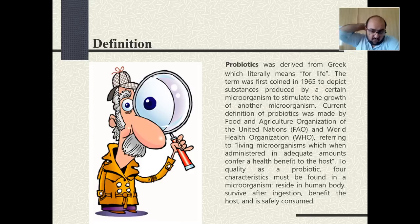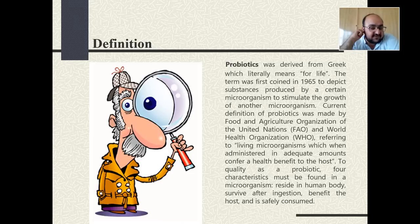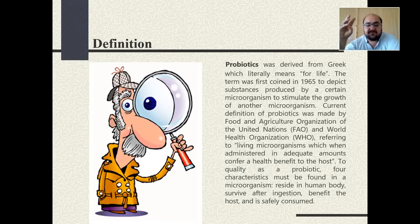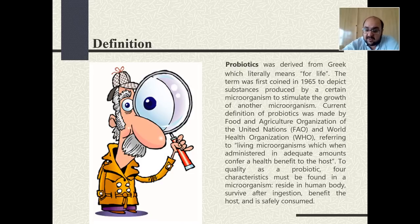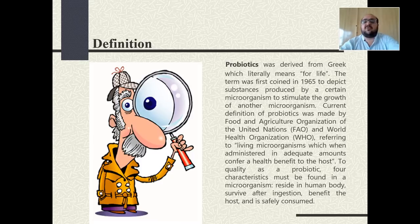To qualify as a probiotic, there are four major characteristics or features it must meet: it must be found in microorganisms, those microorganisms must reside in the human body, they must survive after ingestion, they must provide a benefit to the host, and they must be safely consumed. These are the four basic features of probiotics.